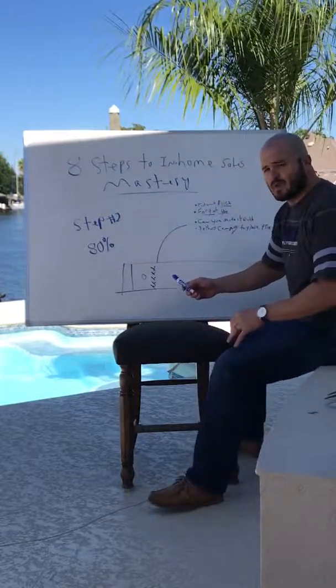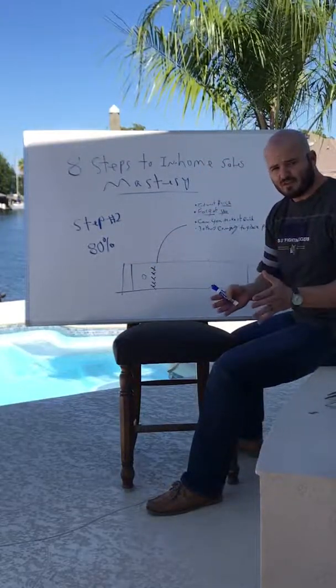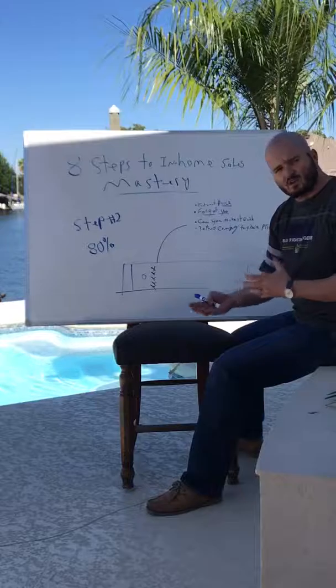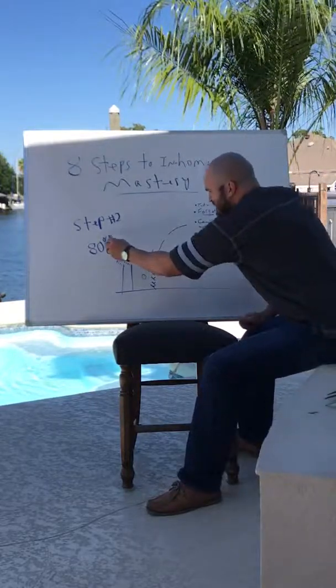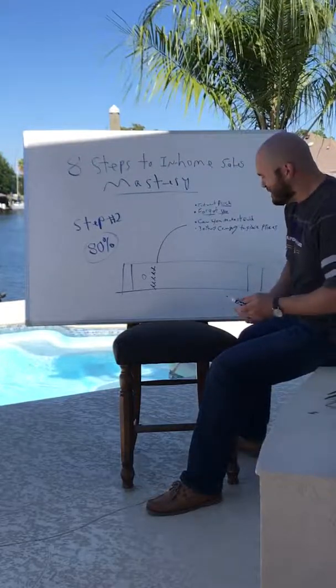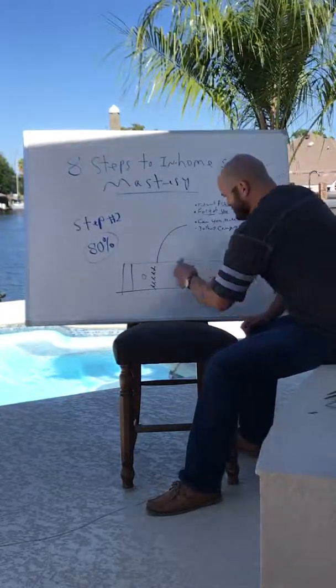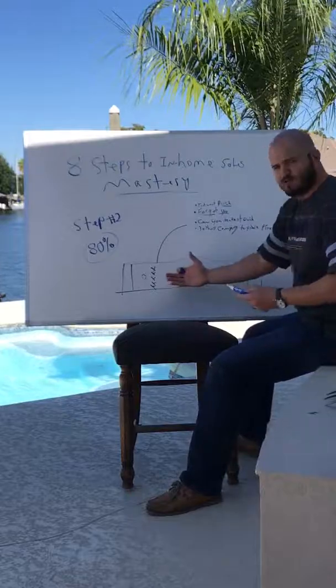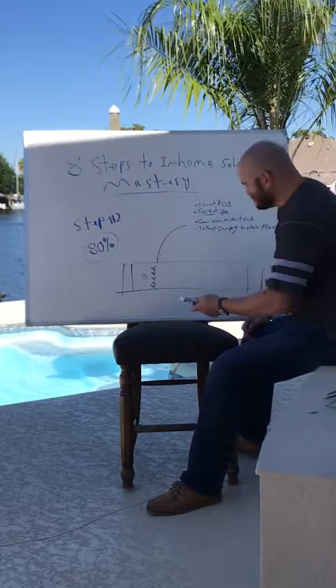So step two is actually called selling with faith. So when you're in the homes, we call it selling with faith. Now 80% of the guys, roughly 80% of the folks that do in-home sales, this is why they only make $40,000, $50,000 a year because they get messed up. I want to use this kind of a visual here, almost like a football field, and I want to do some X's and O's with you.